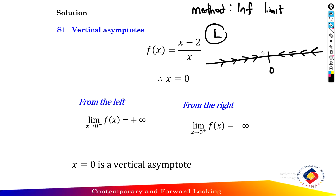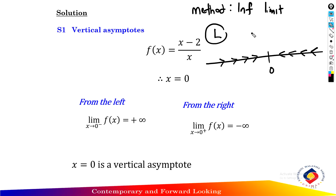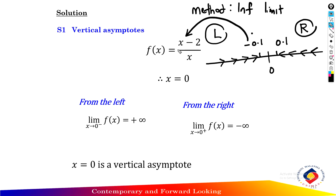Find the nearest value from the left of the function. The nearest value between negative infinity and x equals zero from the left is negative 0.1. Substituting into the function: negative 0.1 minus 2 over negative 0.1 gives negative 2.1 over negative 0.1, which equals positive 21.